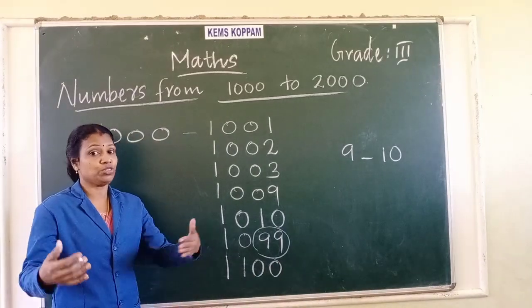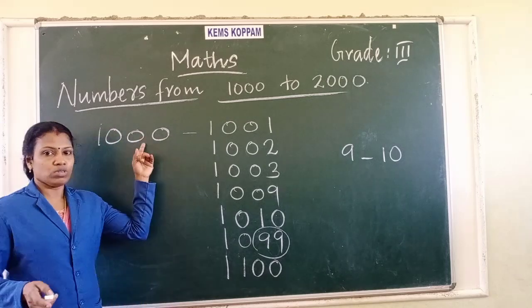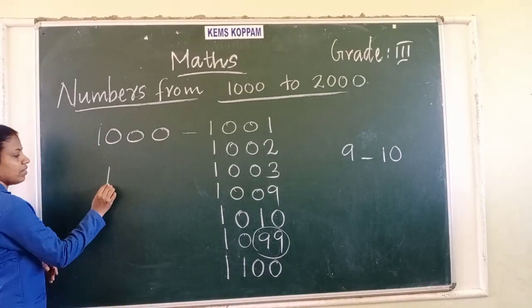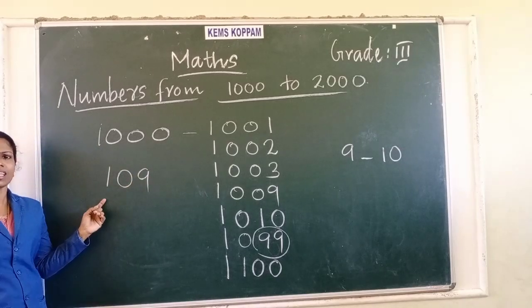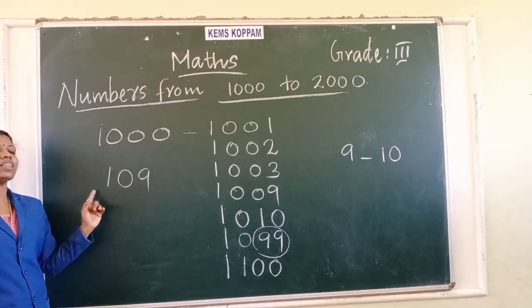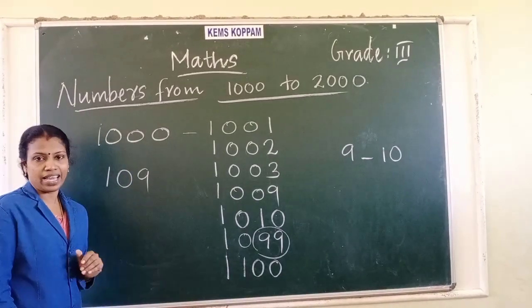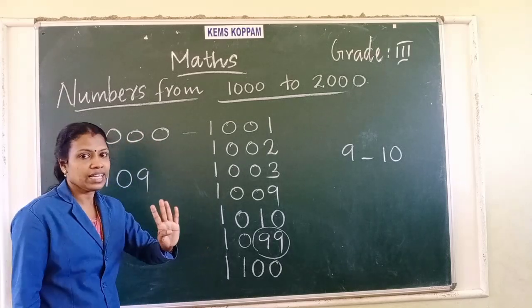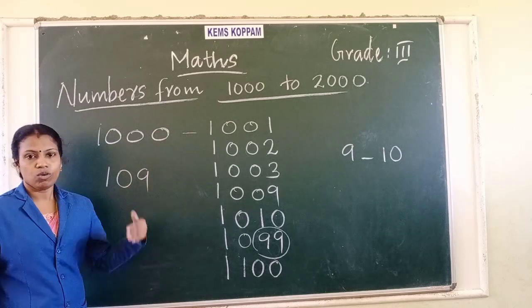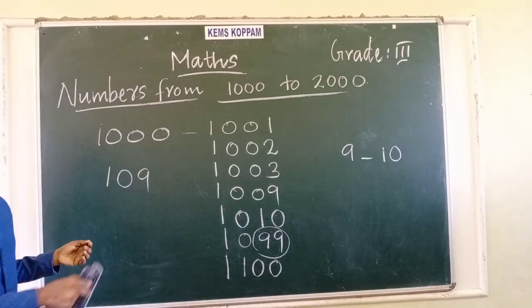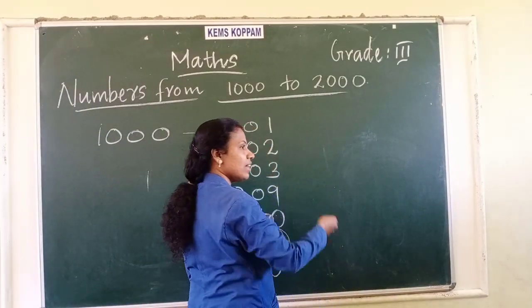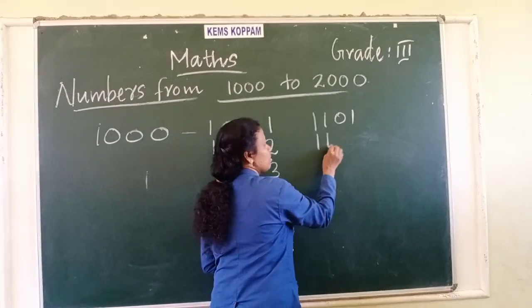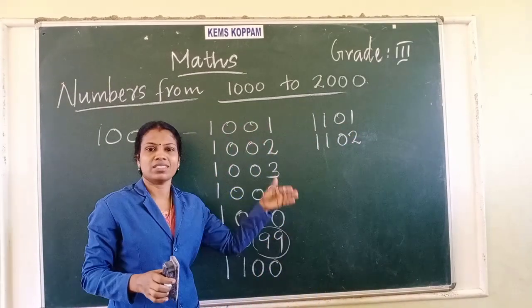Remember that 1,000 has 4 digits — it must have 4 digits. After 1,100, adding 1 gives 1,101, then 1,102. Numbers keep going. For example: 1,459 — what is the next number? The last part is 59, and after 59 comes 60, so the next number is 1,460.